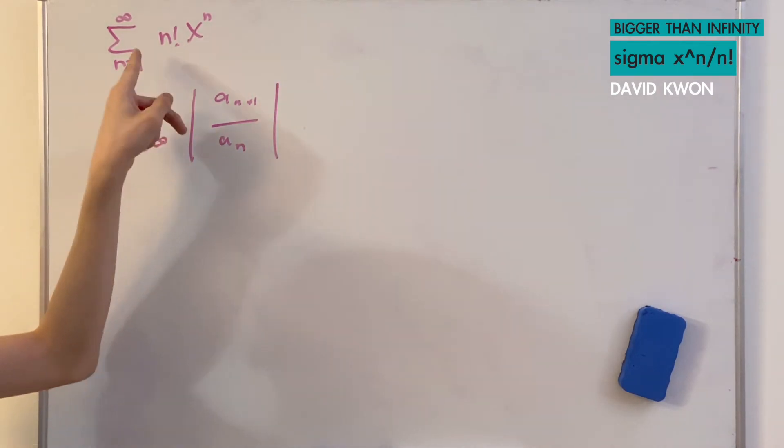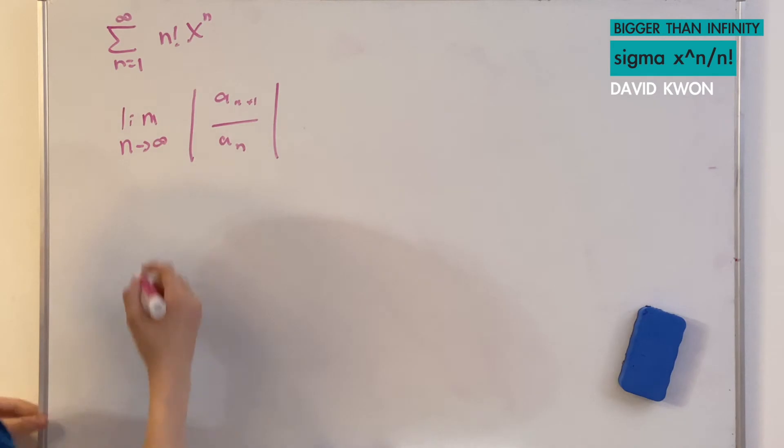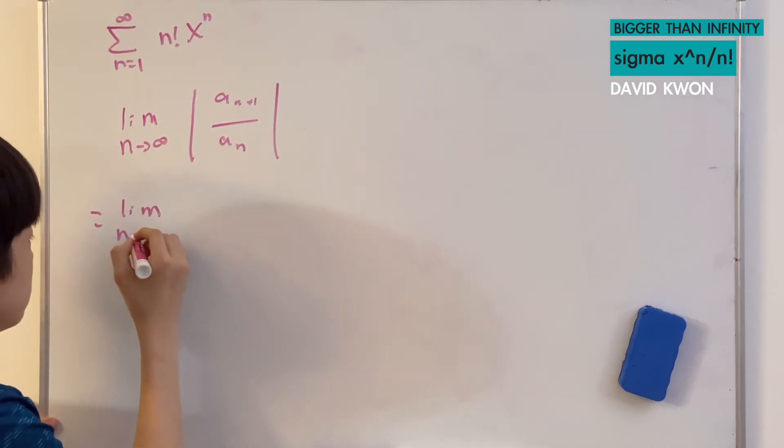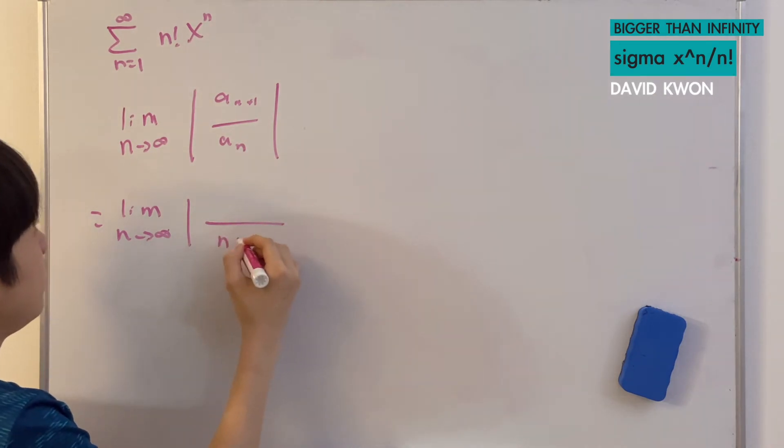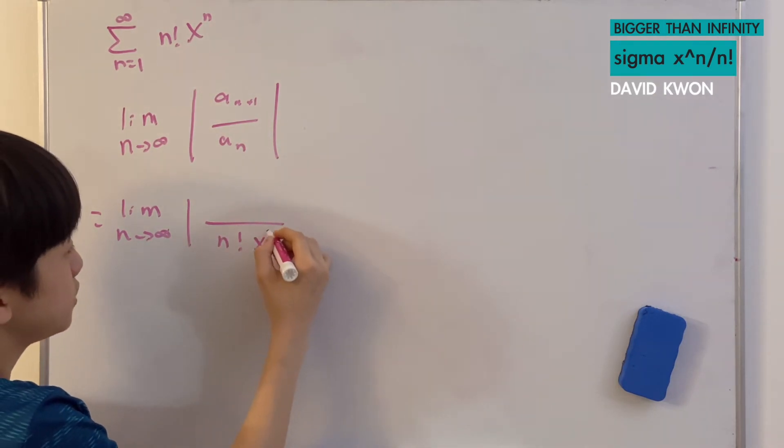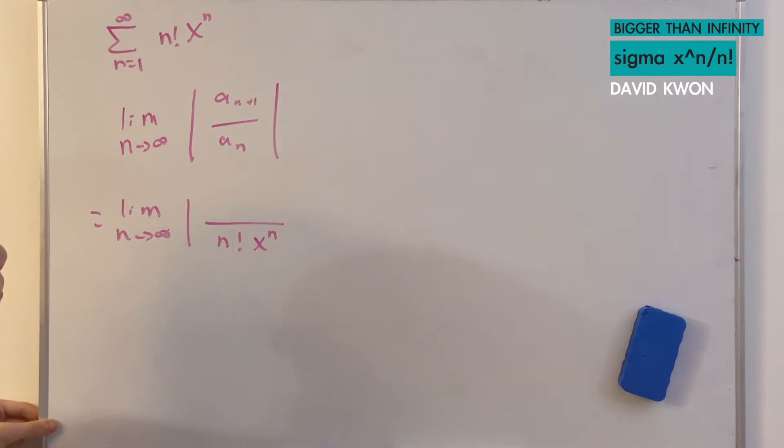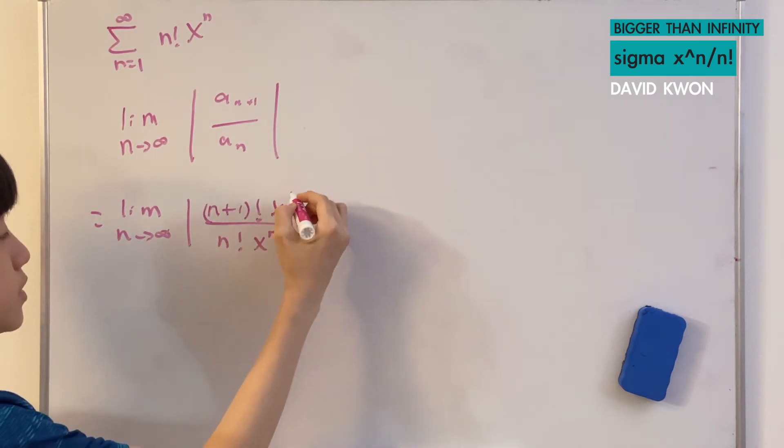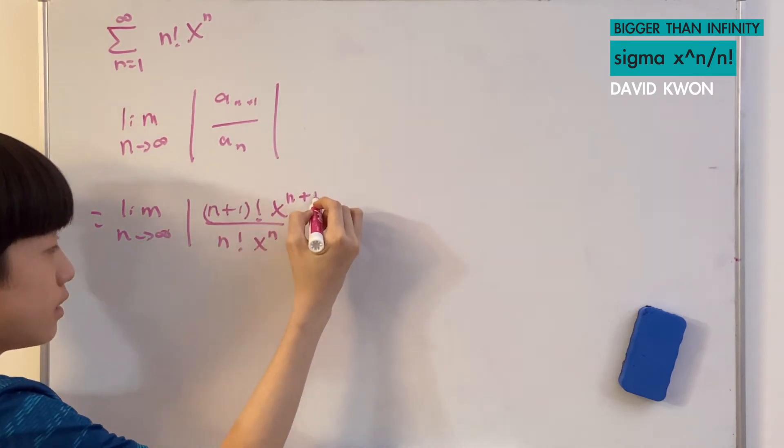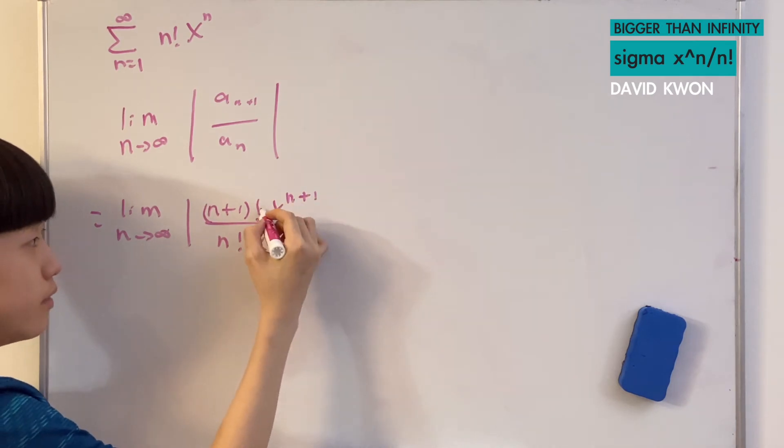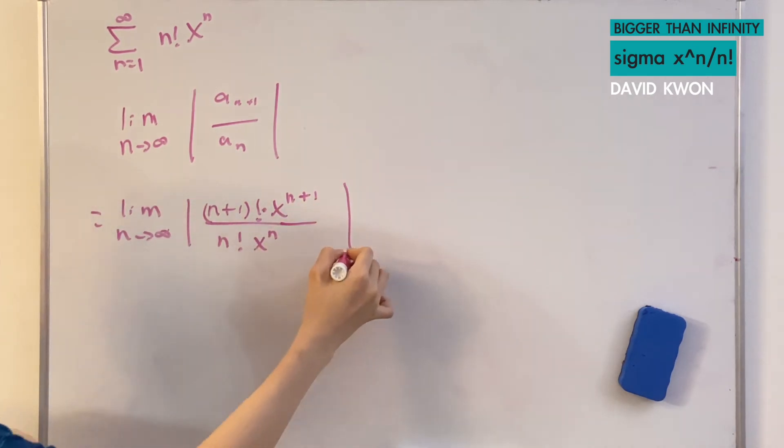And we know that when using the ratio test, the formula is the limit as n approaching infinity of the absolute value of a sub n+1 over a sub n. a_n is our original equation, which is just n factorial times x to the power of n. And then a sub n+1, we just discussed it, that I will just write it. n factorial times x to the power of n+1.